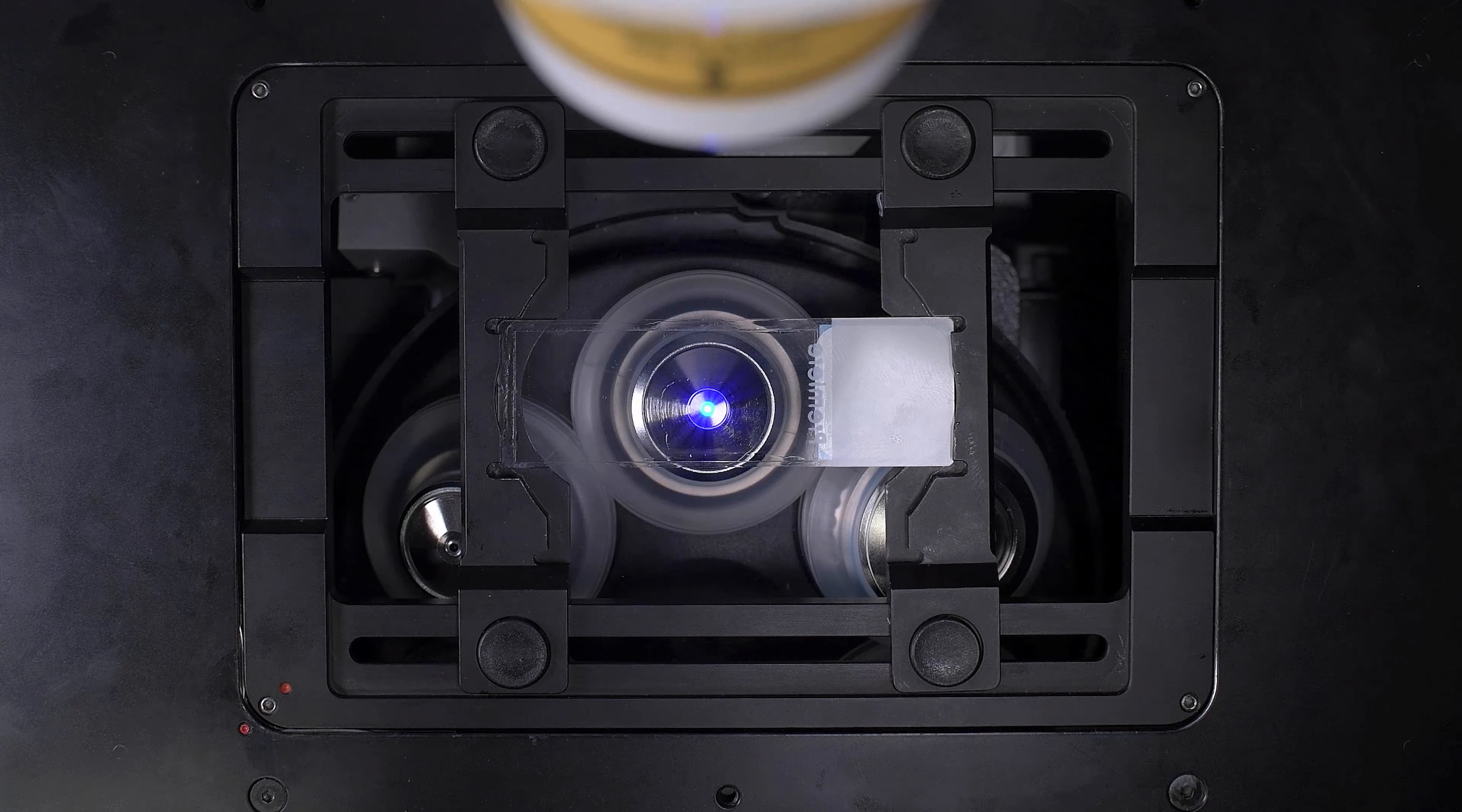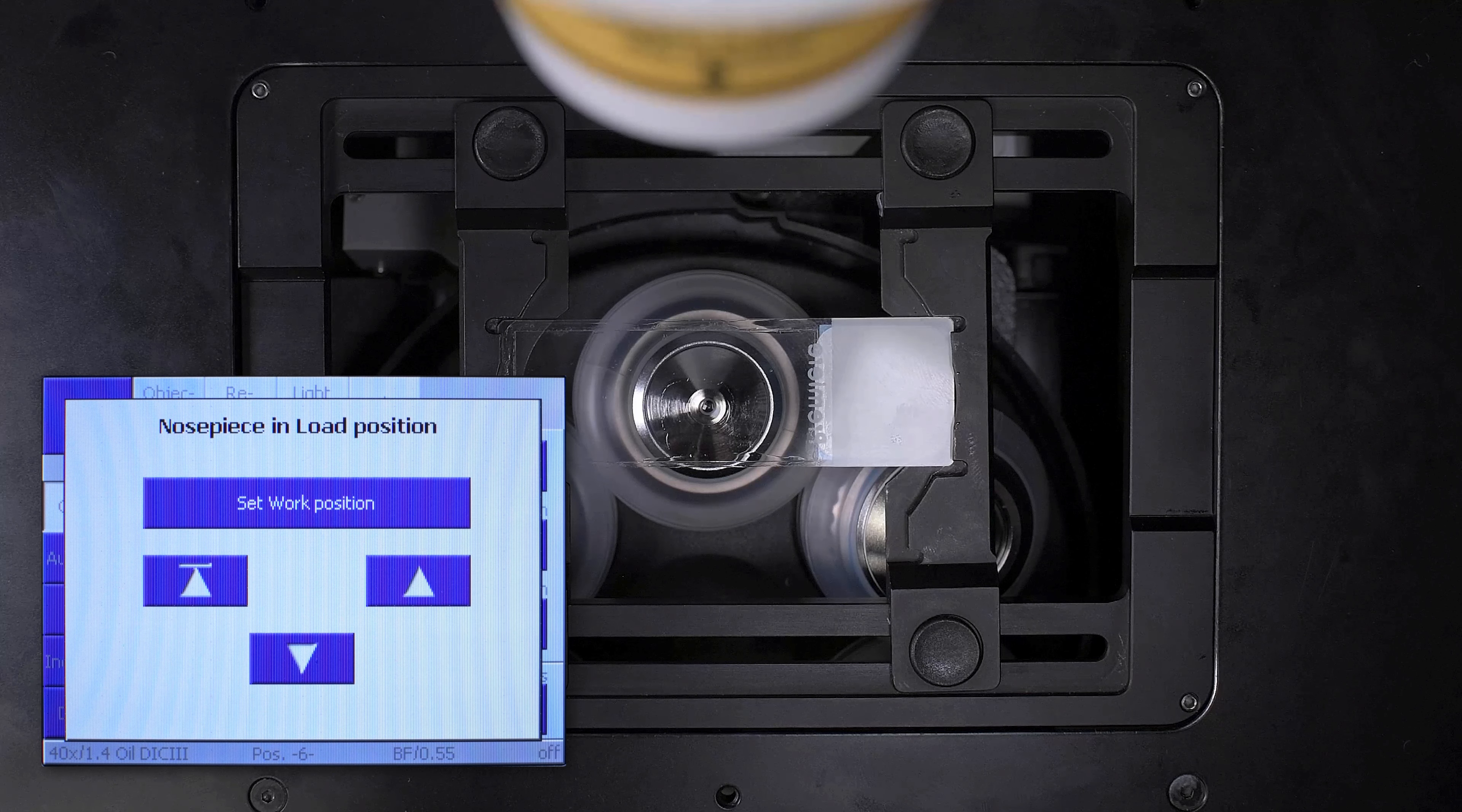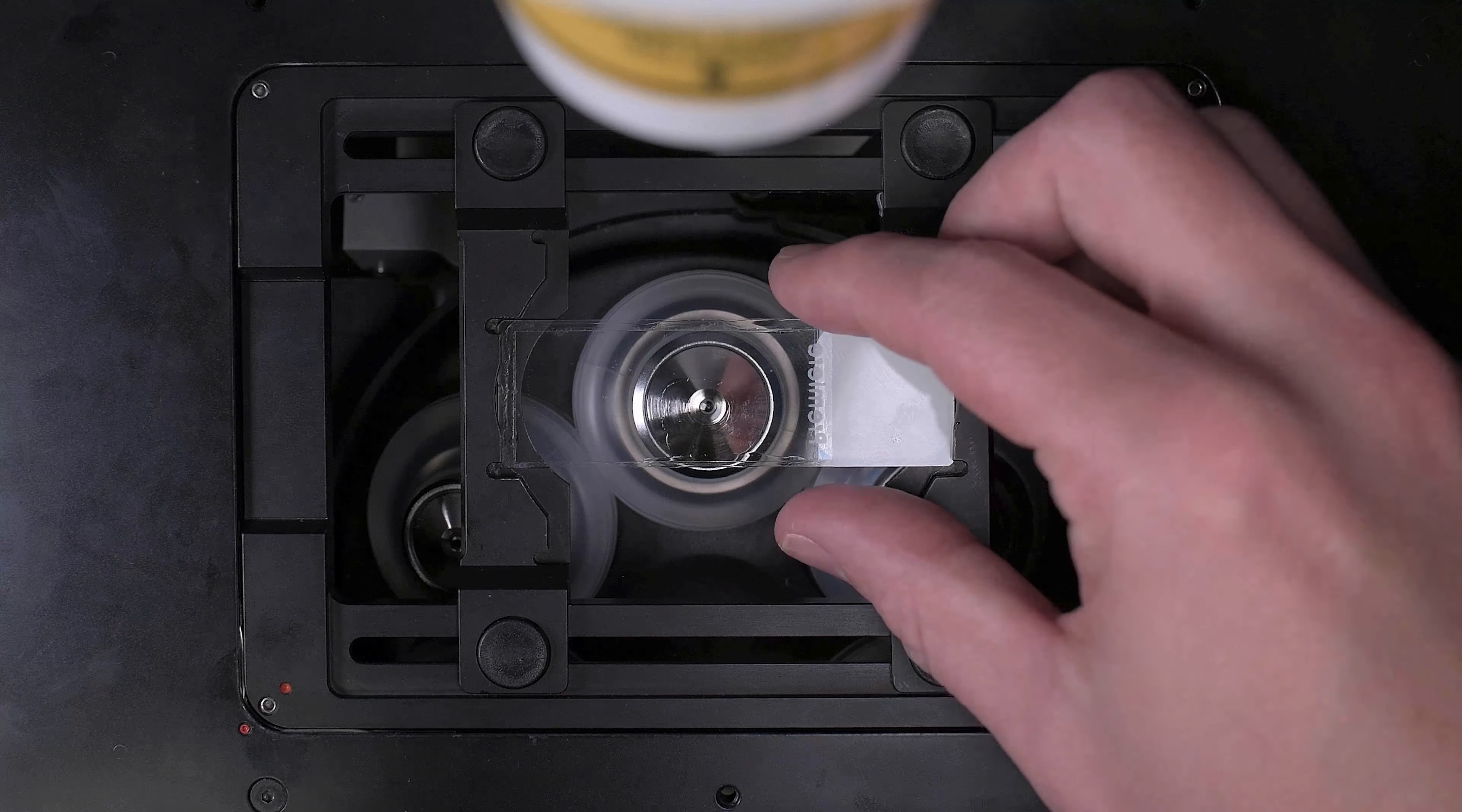When you are ready to change slides, we first want to move our objective to a safe position. From the right-hand side of the TFT display, click Load Position to move the objective to the lower limit of the focus drive. Then click Set Work Position. Remove your slide and replace it with the next slide you want to image.